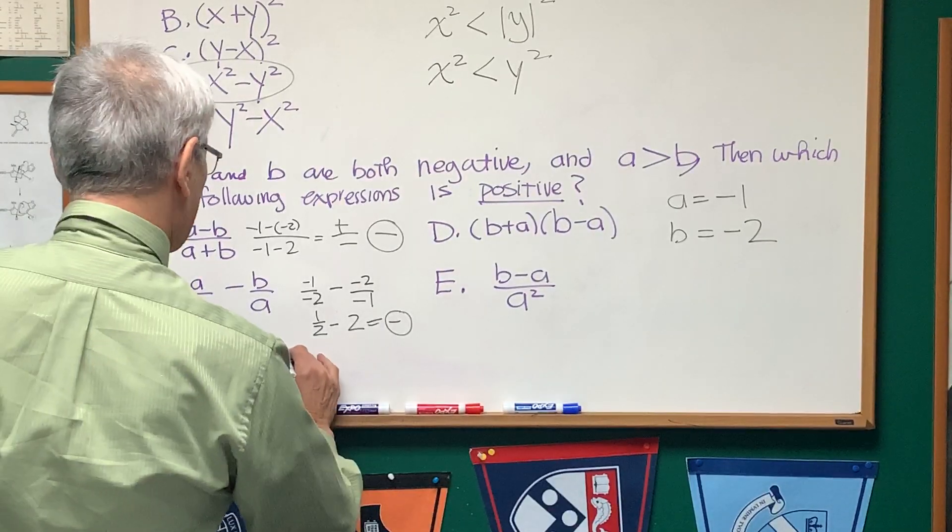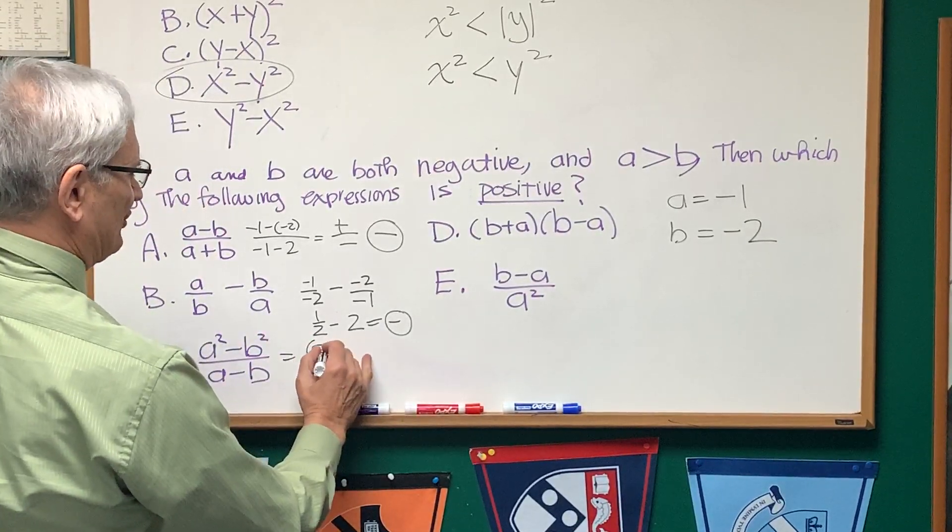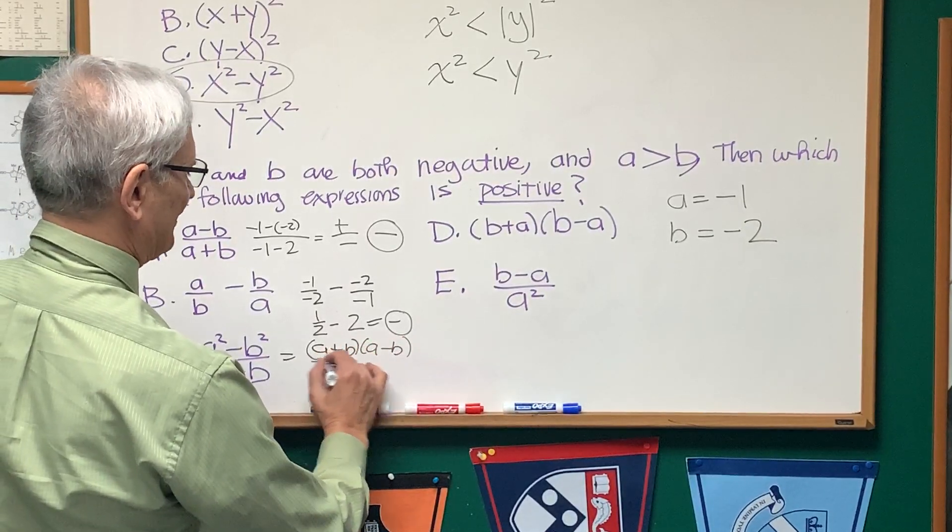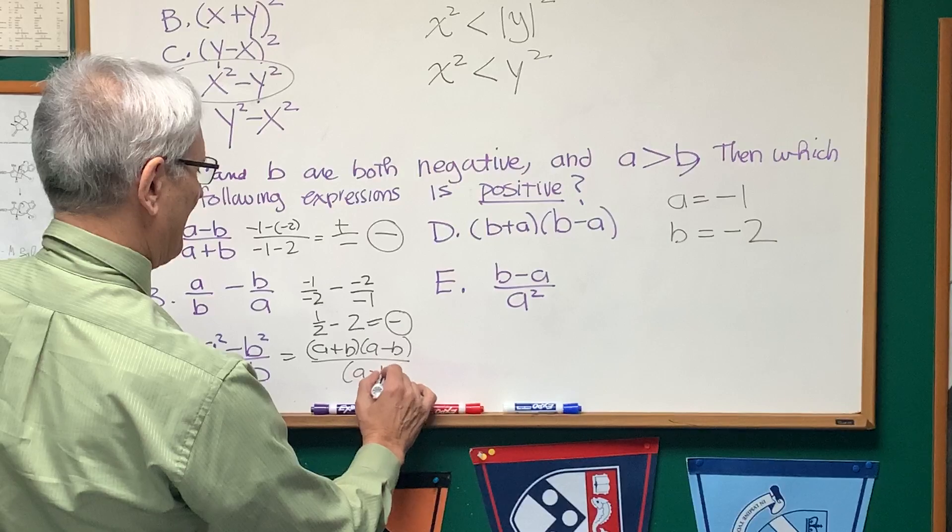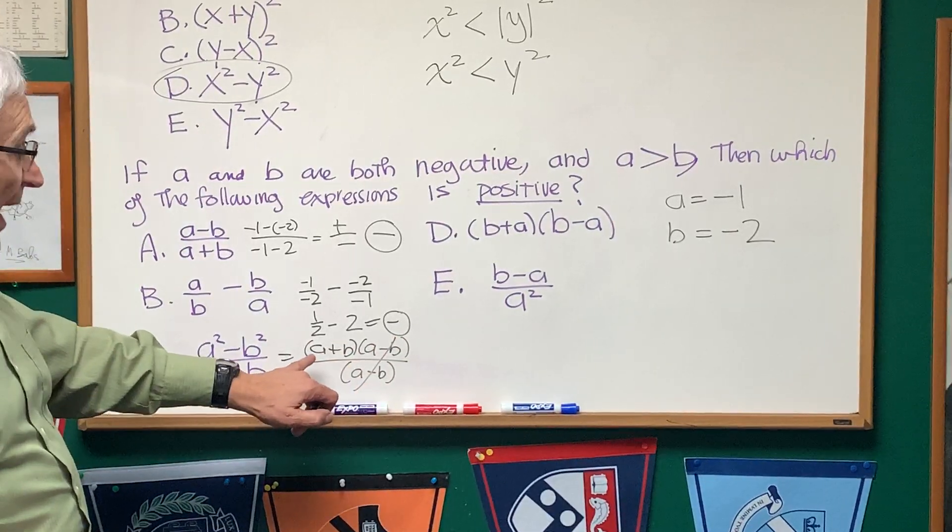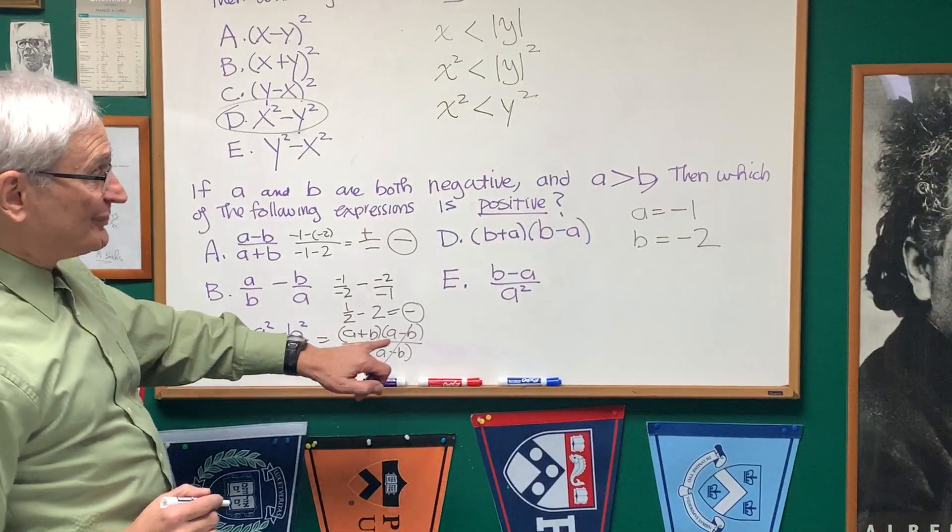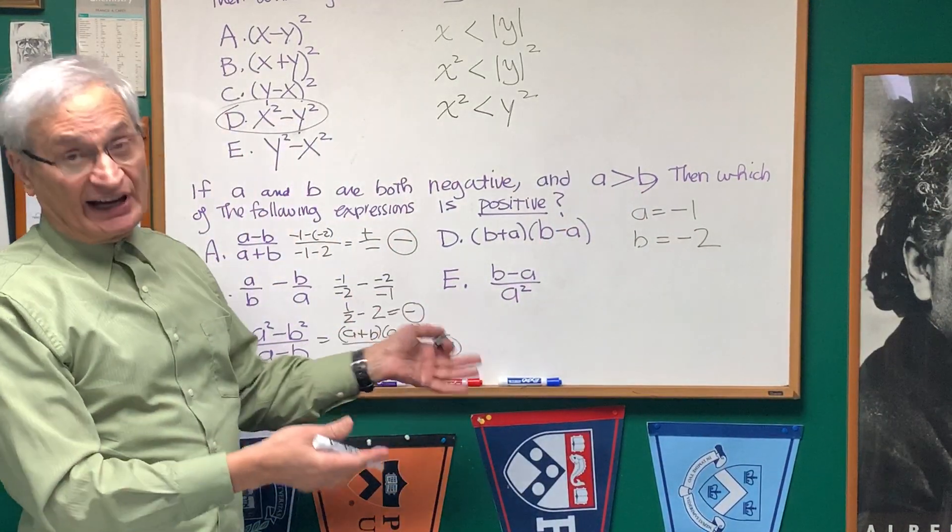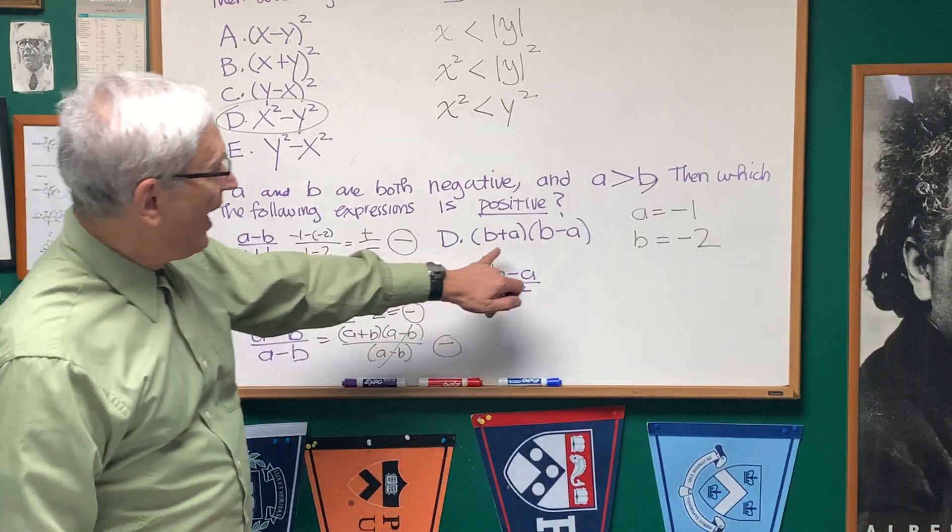Okay, let's go to the third one. A²-B². Well, maybe we can factor that. It's the difference of two squares: (A+B)(A-B) over A-B. The (A-B)'s cancel, and we're left with the expression A+B. And A+B is clearly going to be negative, two negative values.